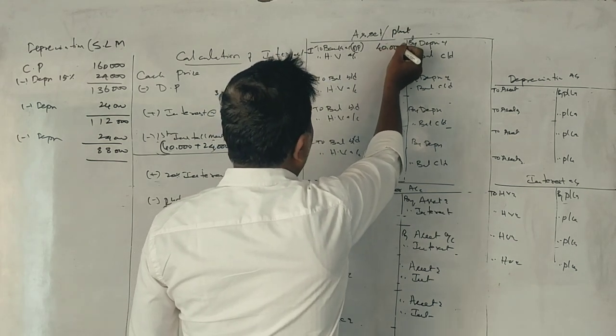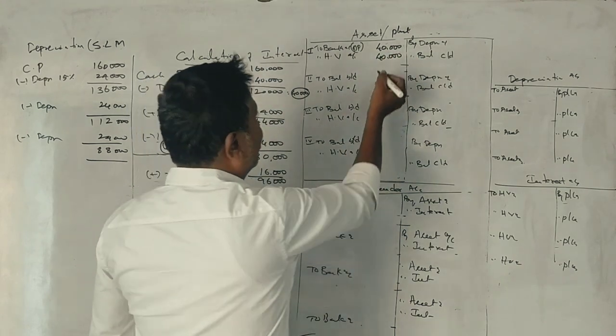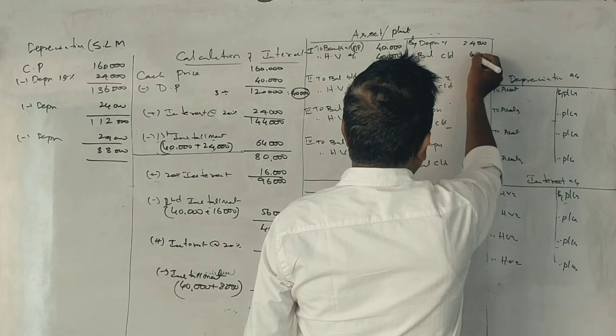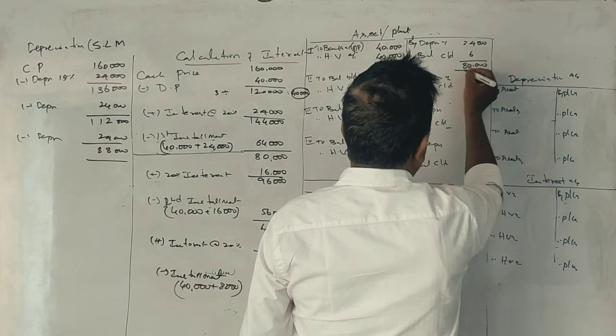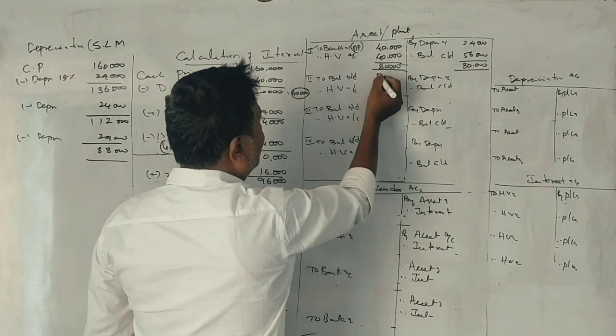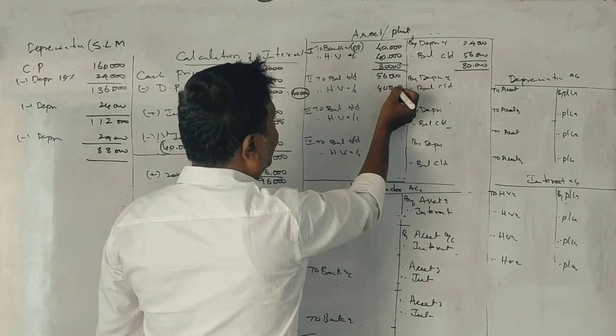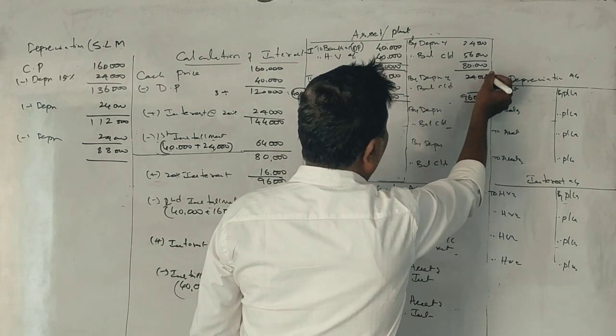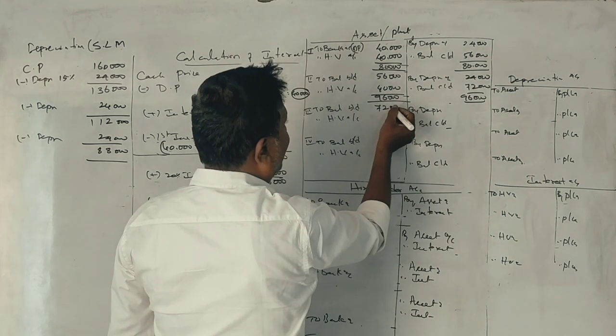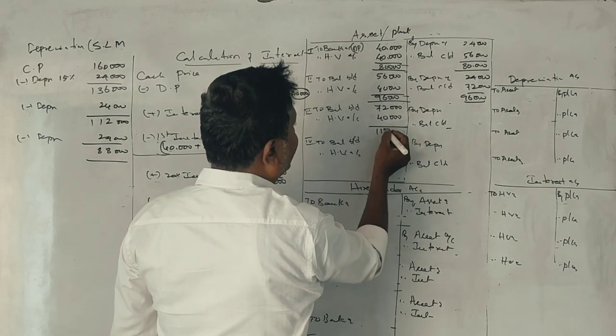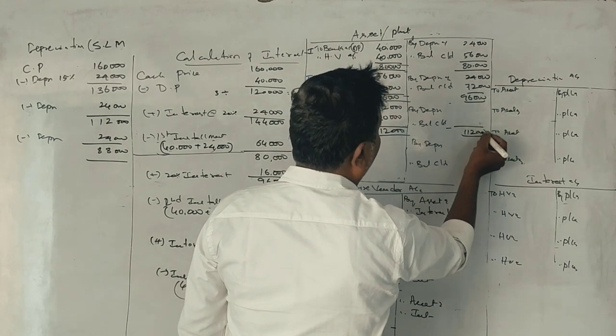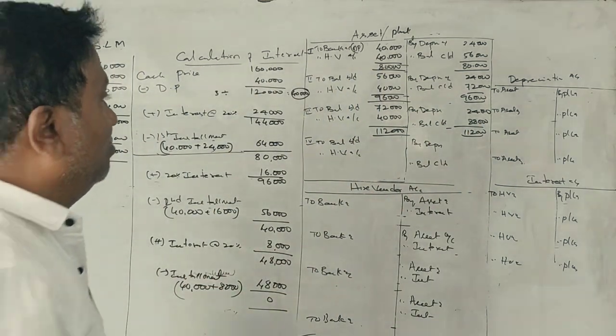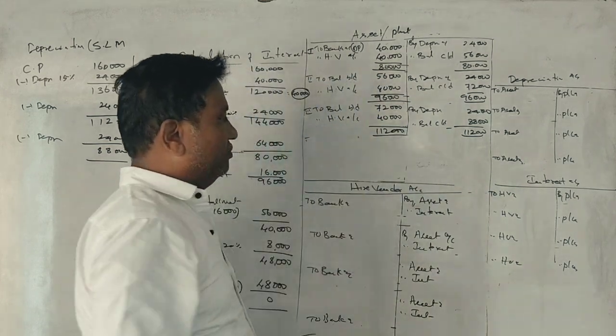Now we need to make the entries. Down payment is 40,000. Next year installment is 40,000. Depreciation is 24,000. Now the balance for this year is calculated based on these amounts. First year: 1,60,000 minus 40,000 down payment.